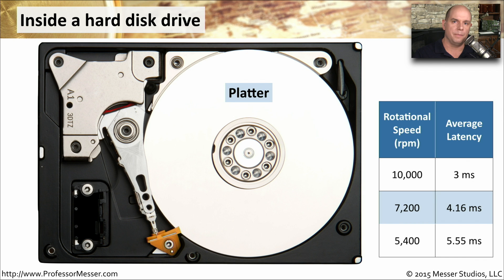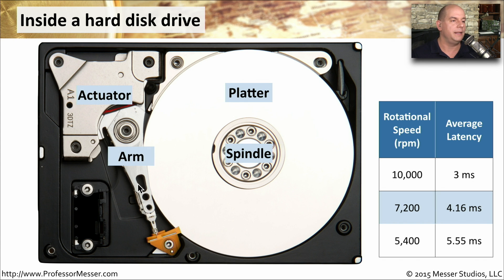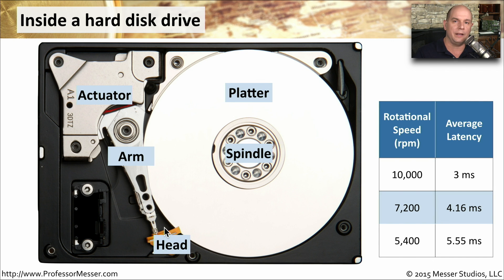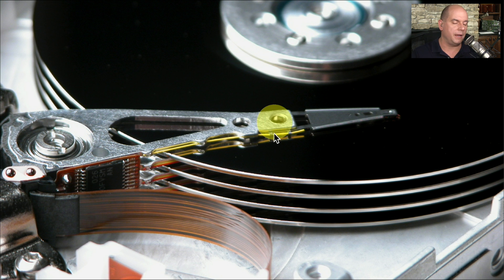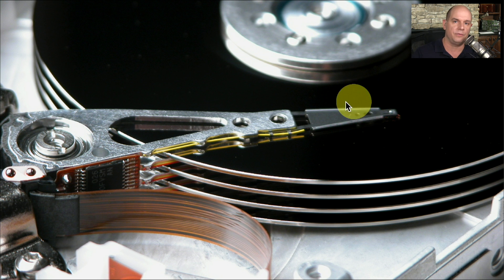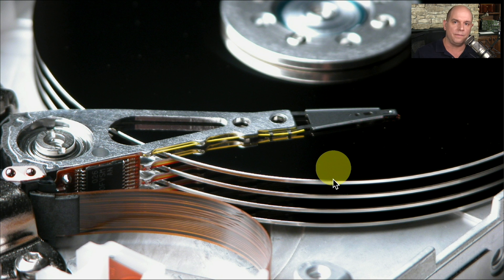Let's look in more detail at the different components inside the hard drive. We first have spinning platters rotating around a spindle, and we have to have some way to pull information off these platters. There's an actuator on the left side connected to an arm, which can move the arm back and forth across the spinning platters. At the very end of this arm is a read-write head — that's what's used to read and write the magnetic information. There are multiple heads, so we're able to read and write from all platters simultaneously.